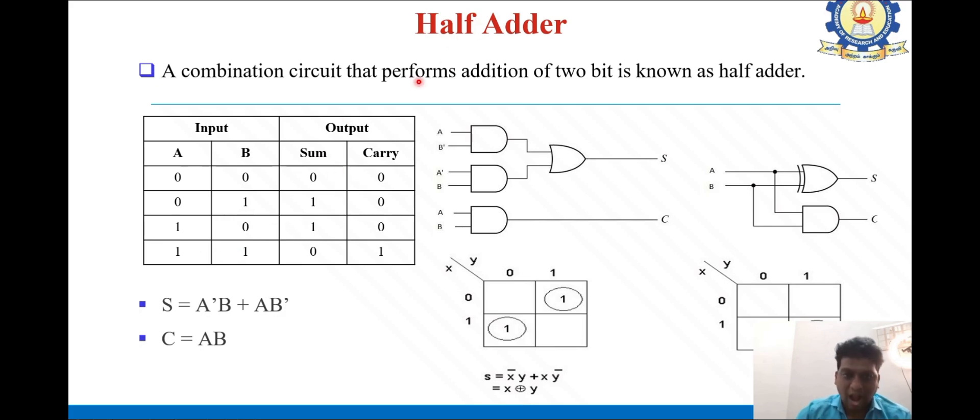When we are adding two variables, we are getting sum and carry. For 0 plus 0, we get sum 0 and carry 0. For 0 plus 1, sum is 1 and carry is 0. For 1 plus 0, sum is 1 and carry is 0. When we add 1 plus 1, we get sum 0 and carry 1. This is the logical representation. We plot a K-map for this, getting S equals A bar B plus A B bar, and C equals A B. From these equations, we draw the logic circuit.